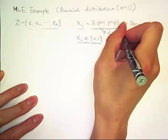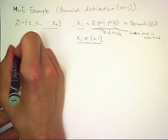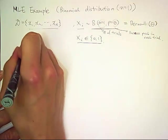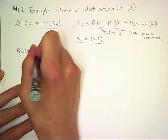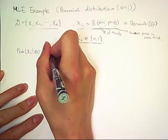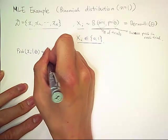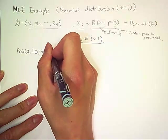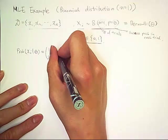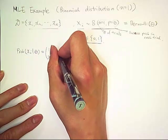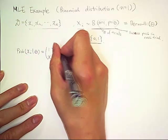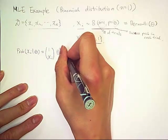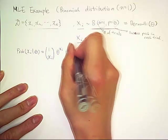So since it follows a binomial distribution, probability of x sub i given theta is 1 choose x sub i times theta to the x sub i times 1 minus theta to the 1 minus x sub i.